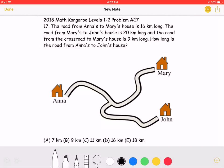Let's start by noting that this is the crossroads. The problem states that the road from Mary's house to the crossroads is 9 kilometers long. It also states that the road from Anna's to Mary's house is 16 kilometers long.